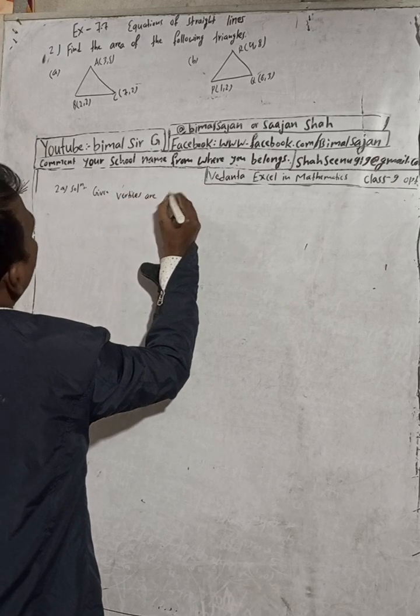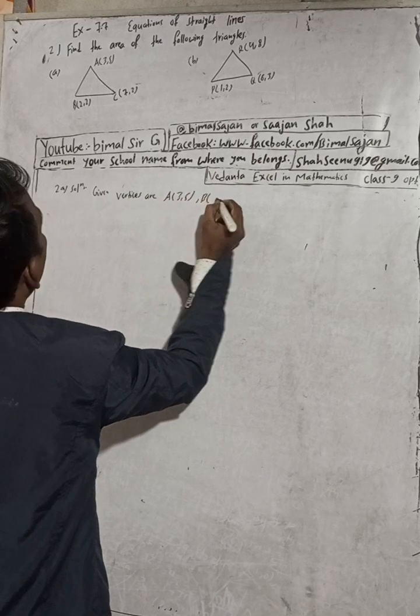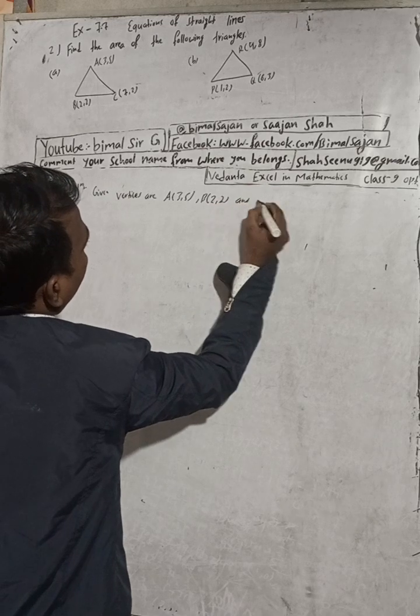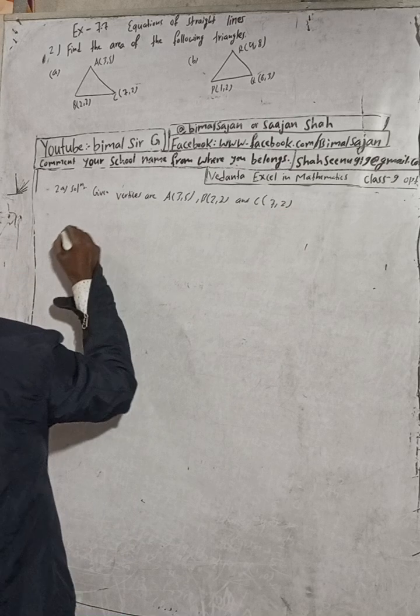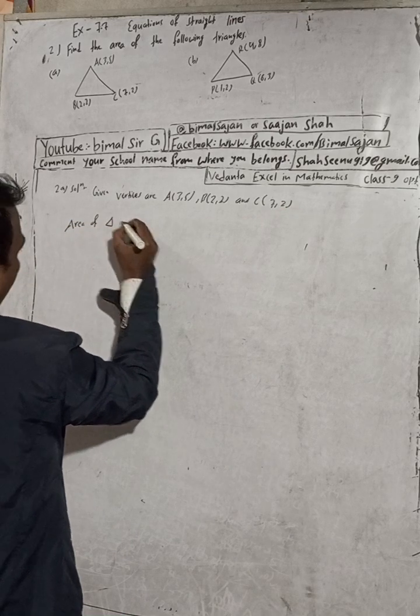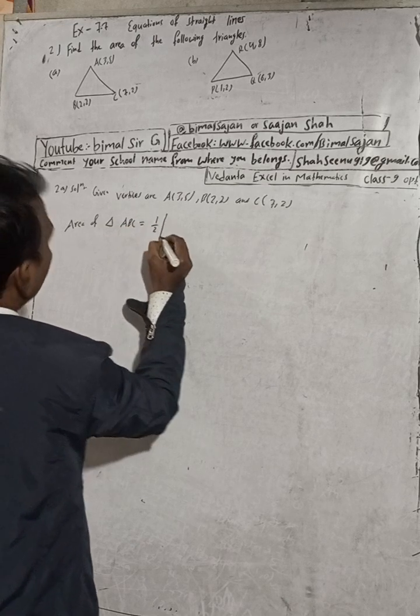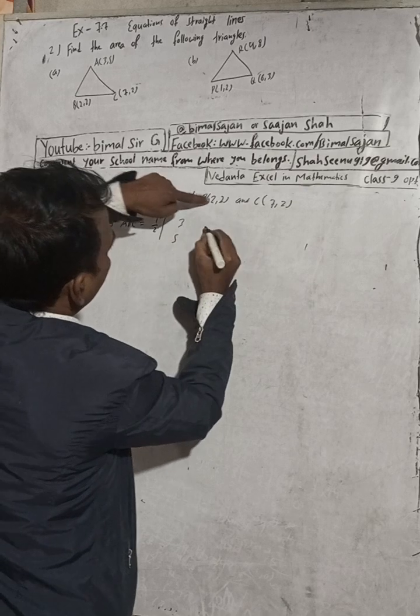Given vertices are A(3,5), B(2,2), and C(7,2). Now, area of the triangle ABC is equal to 1/2 times the determinant: 3, 5; 2, 2; 7, 2.